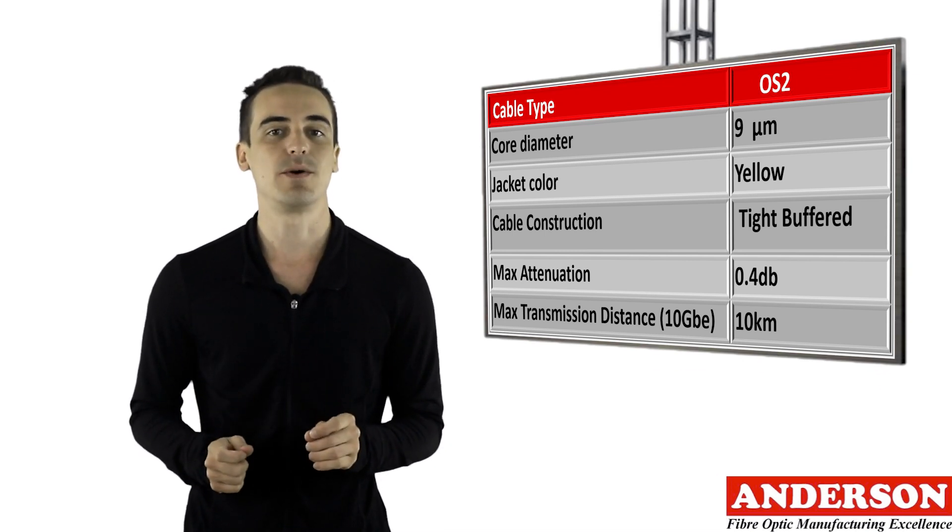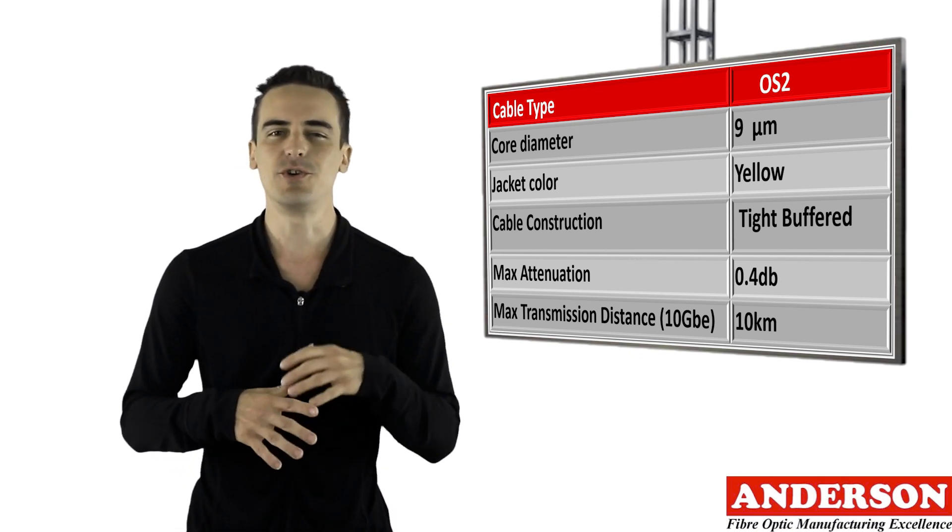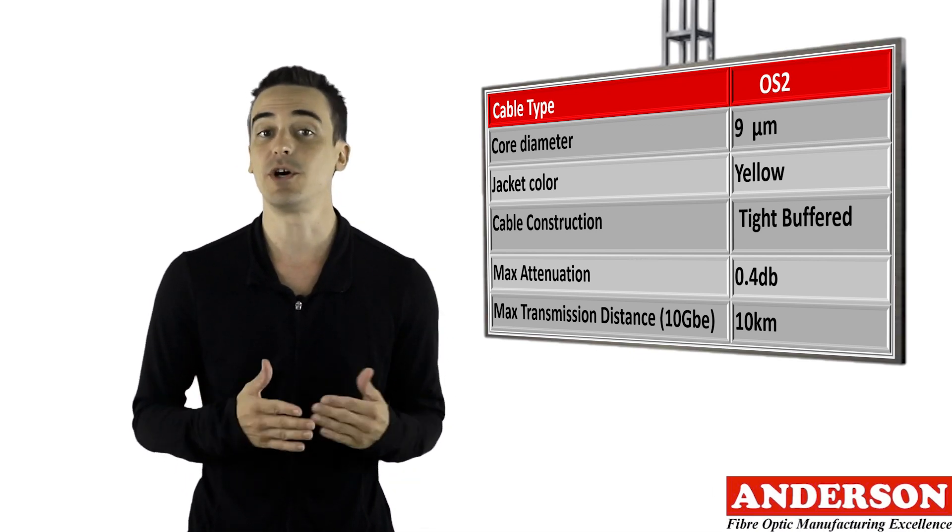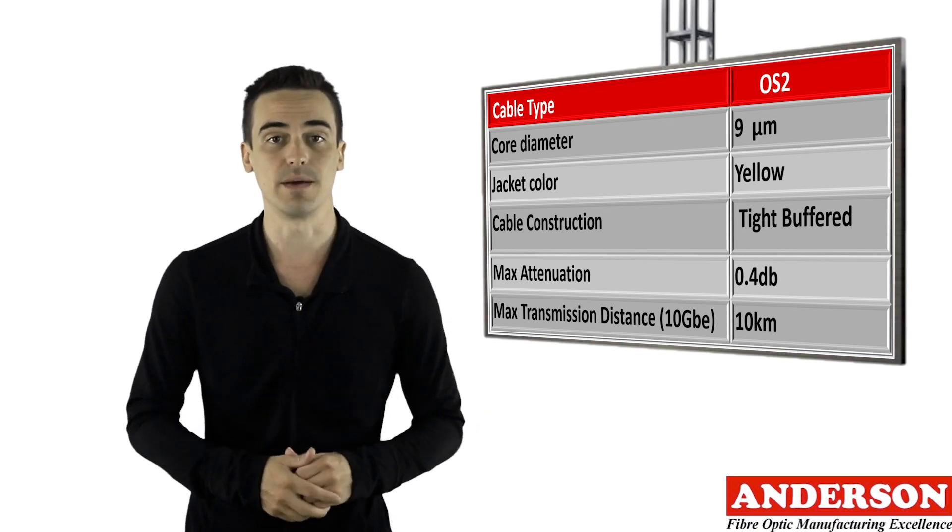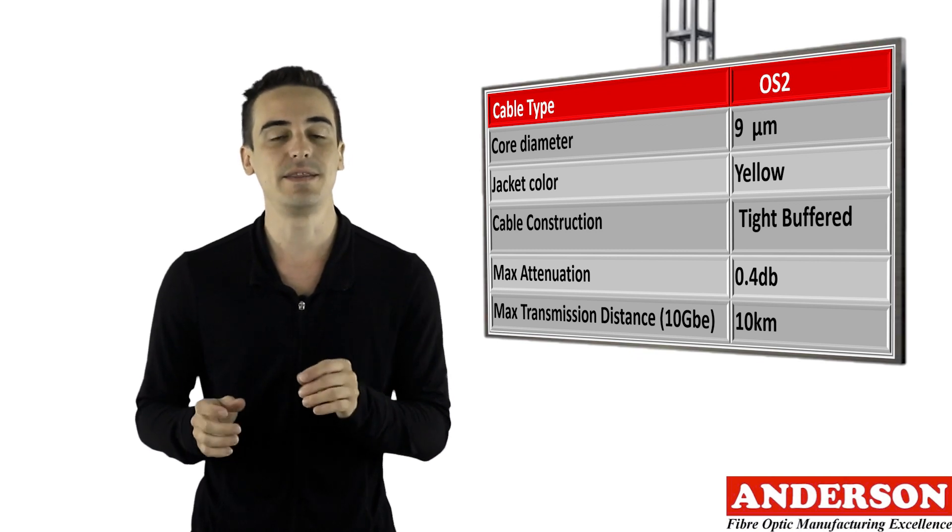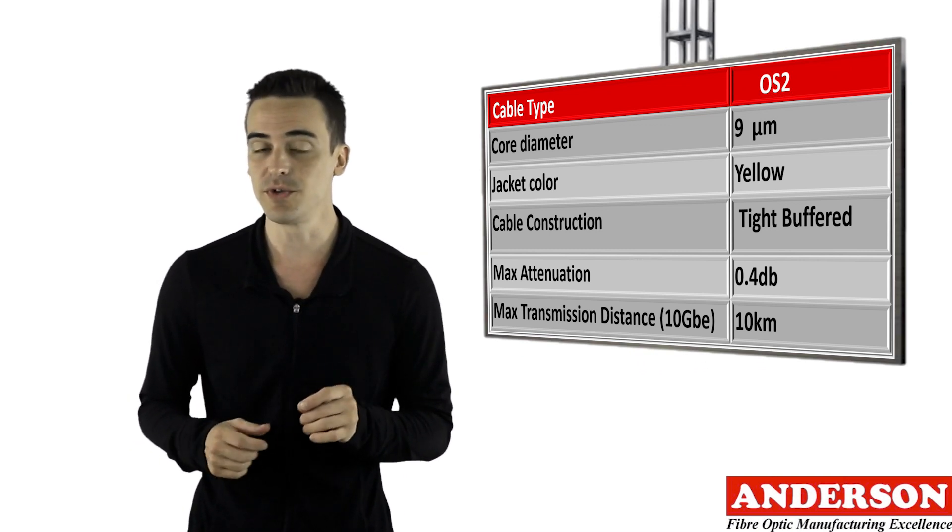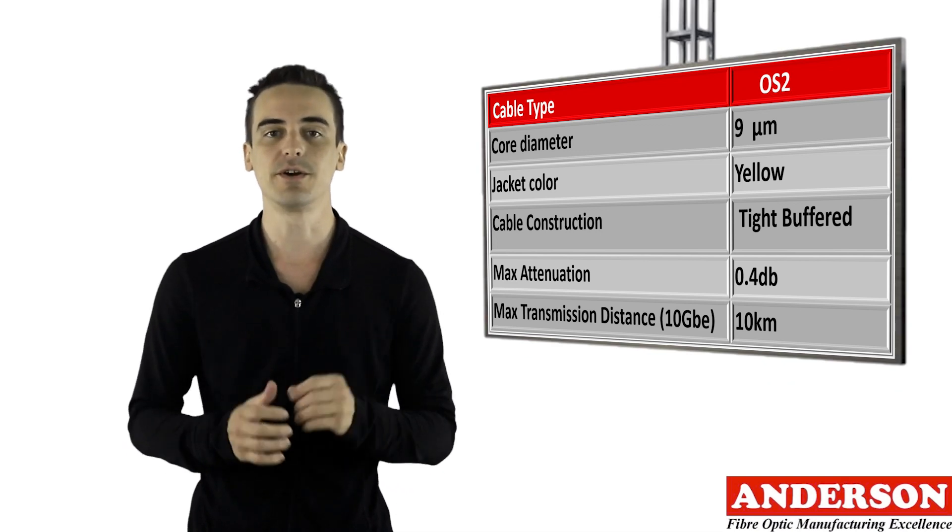Installers should understand that when using less than 2 kilometers of OS2 cable, there is no real benefit gained compared to OS1 indoor-outdoor cable. OS1 indoor-outdoor cable can achieve the same performance in these shorter distances. Once it's beyond that 2 kilometer threshold, OS2 becomes the clear choice.